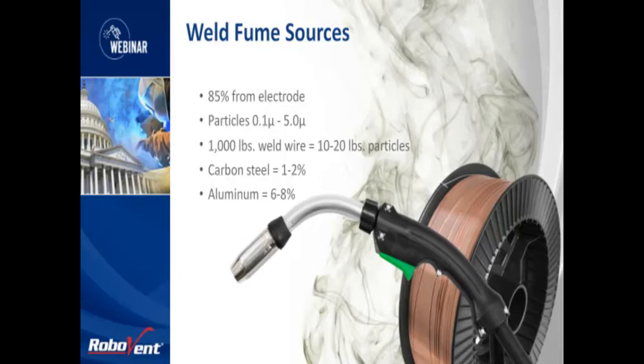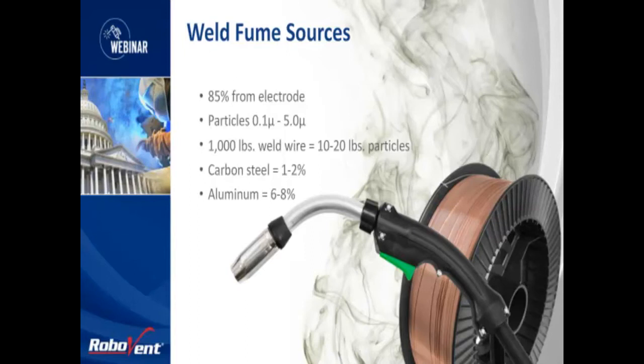A good rule of thumb for how much particulate is generated during the welding process is this: for every 1,000 pounds of weld wire used, 10 to 20 pounds of particulate can be generated. So if you run the math — for every 1 pound of weld wire used, about 25 to 50 million weld fume particles are generated. And that's a lot of particles.